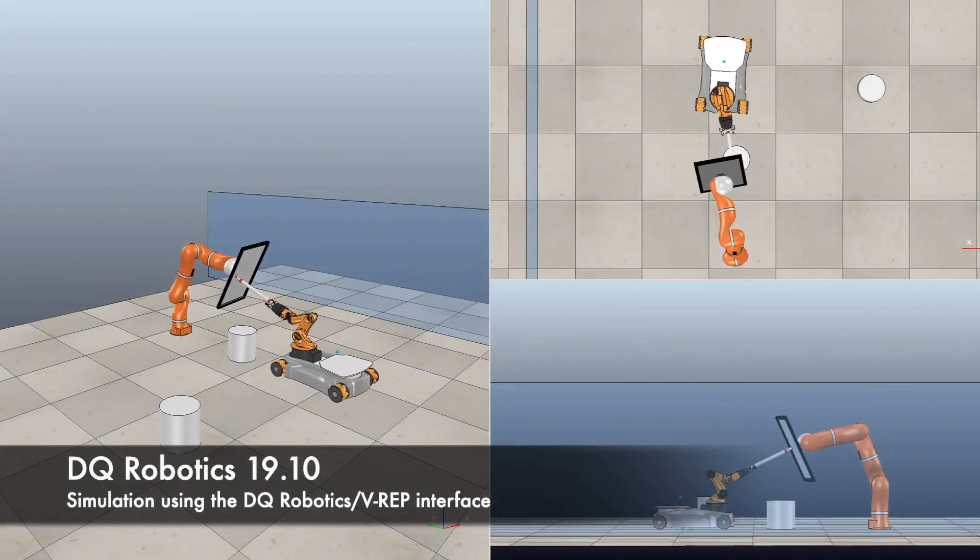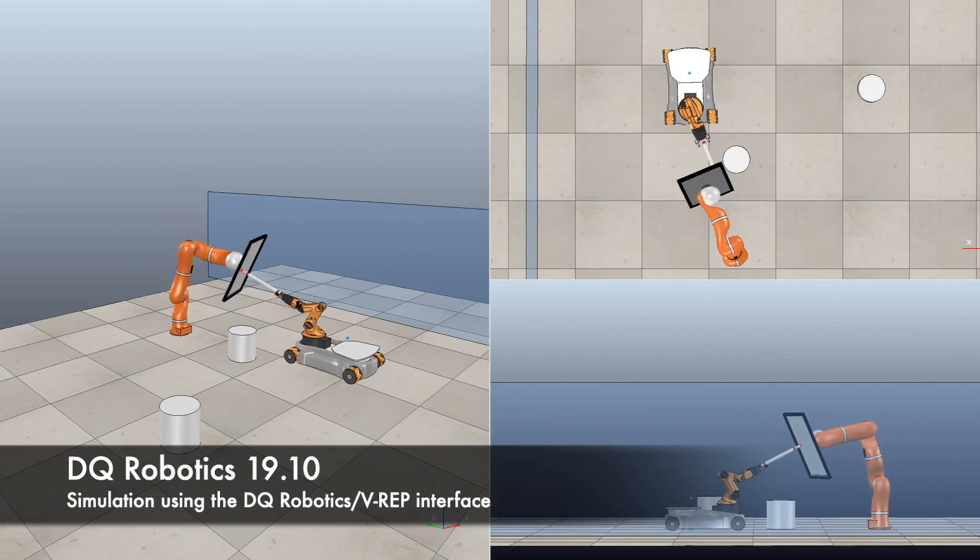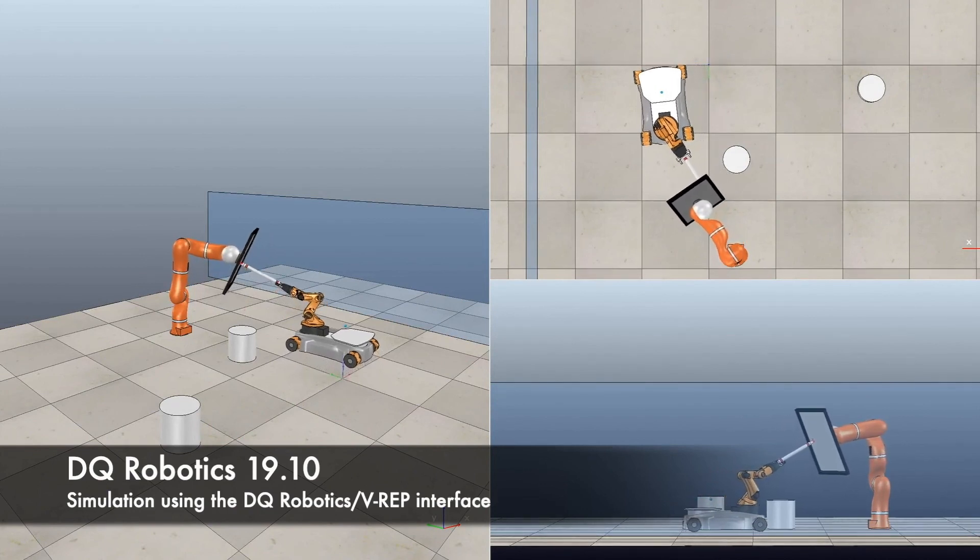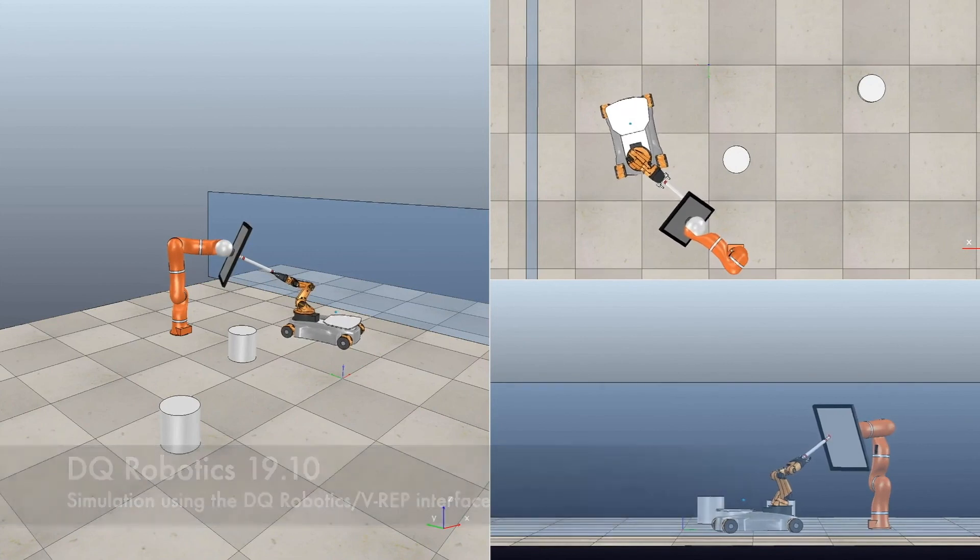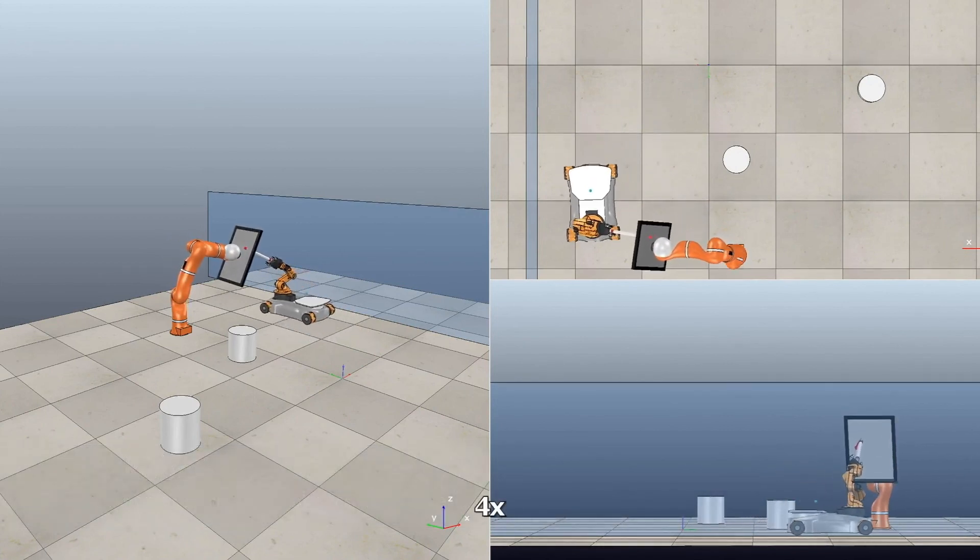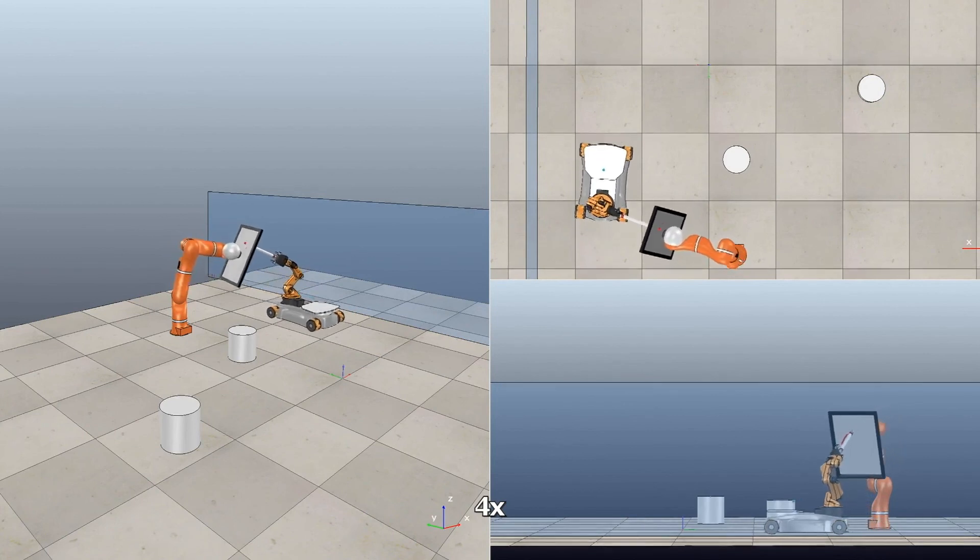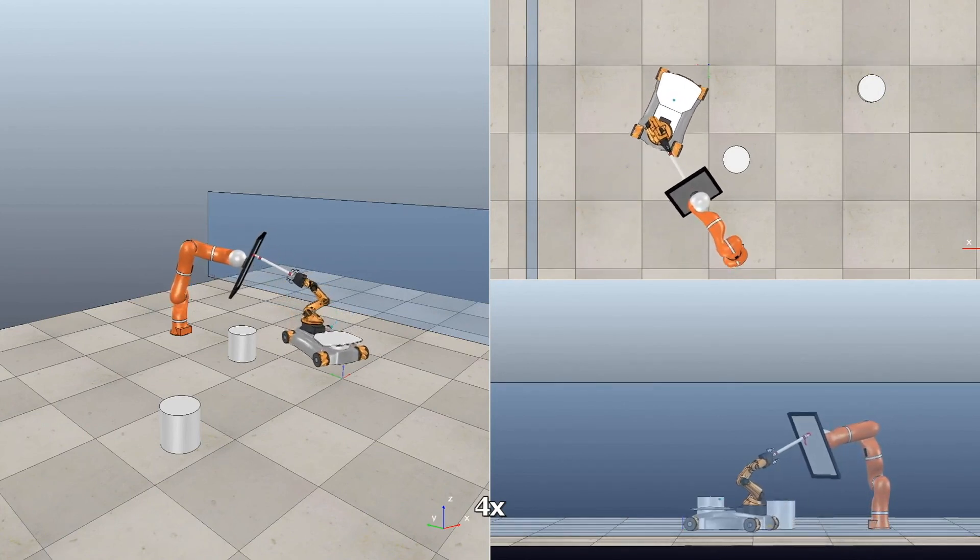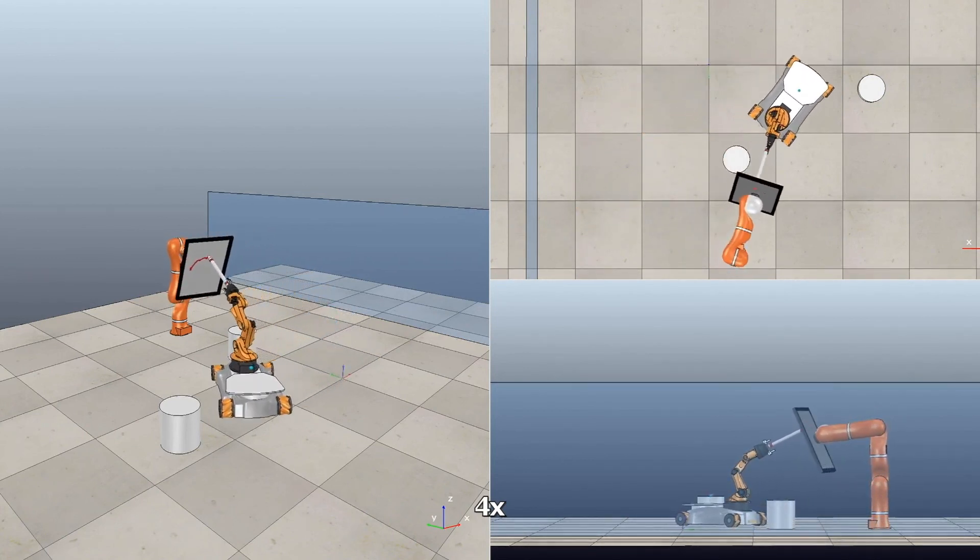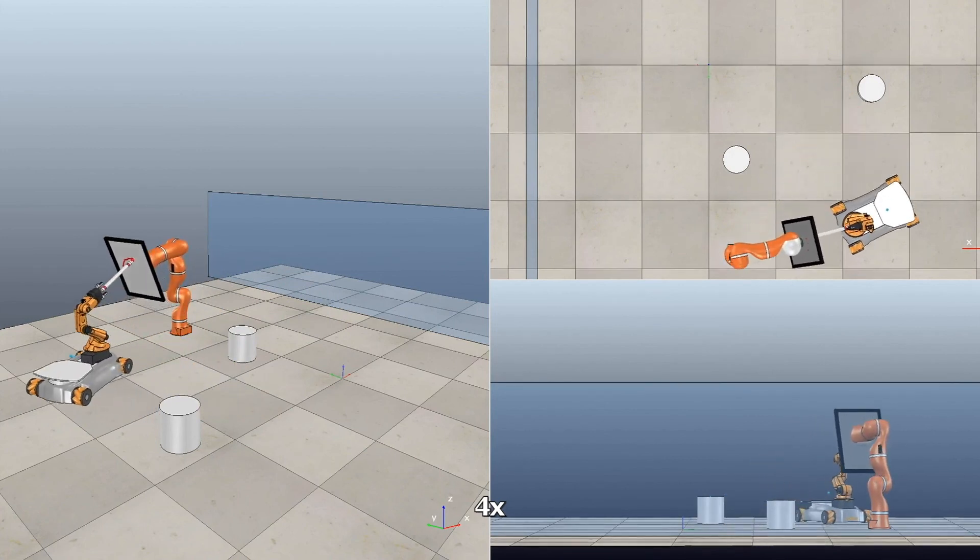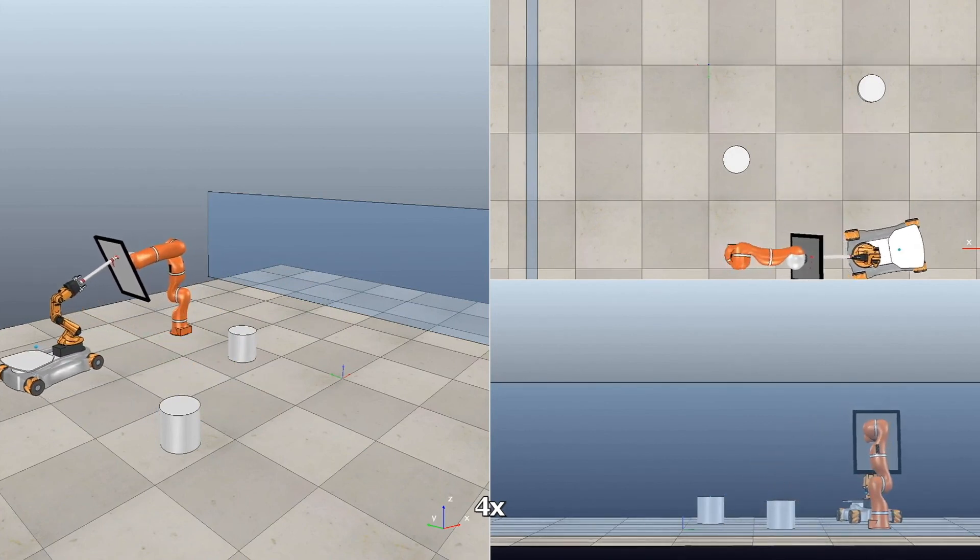This is the result of the simulation. The KUKA LBR tracks a periodical trajectory while holding a whiteboard. Meanwhile, the KUKA U-bot has to draw a circle on the whiteboard while avoiding collisions with the obstacles in the workspace. Here, modeling, control, and general geometrical transformations are done by using dual quaternion algebra.